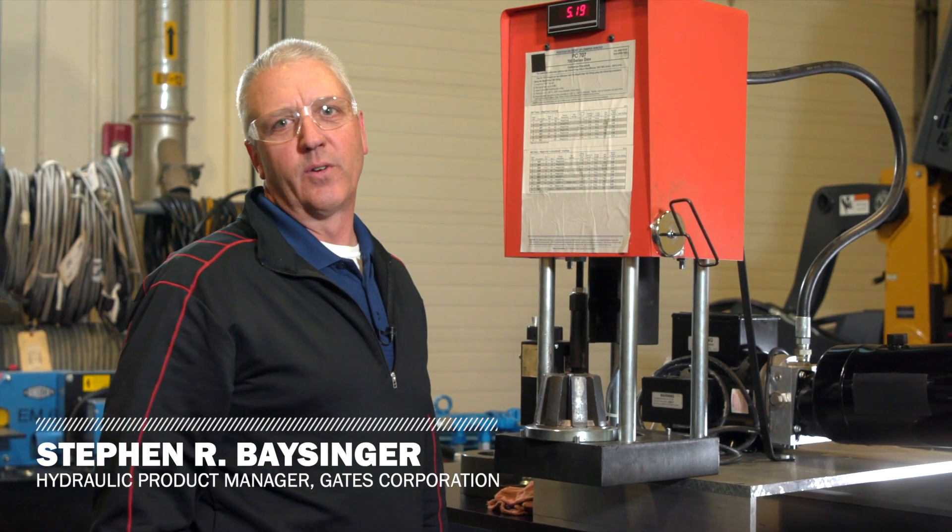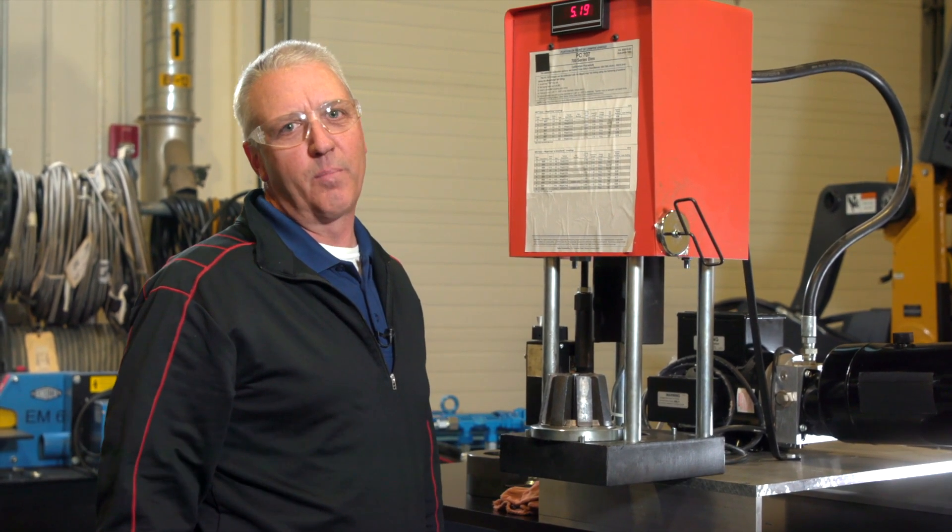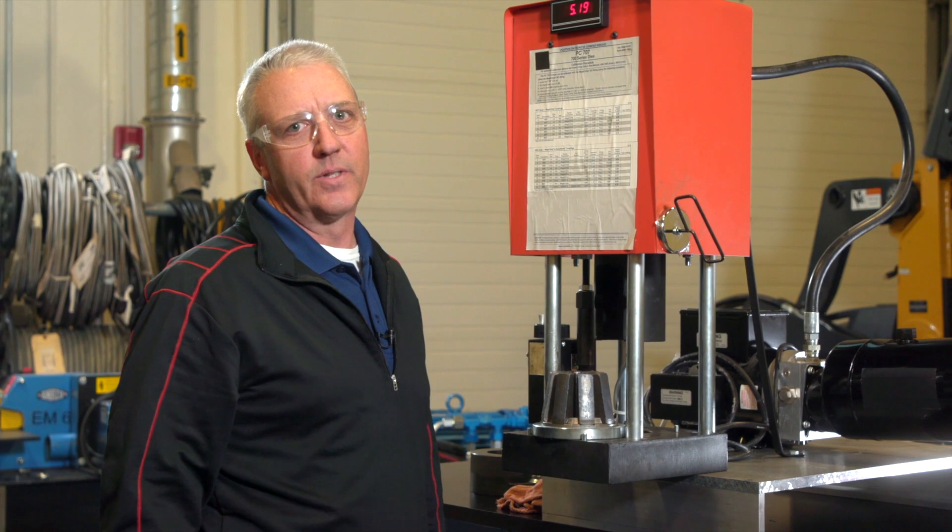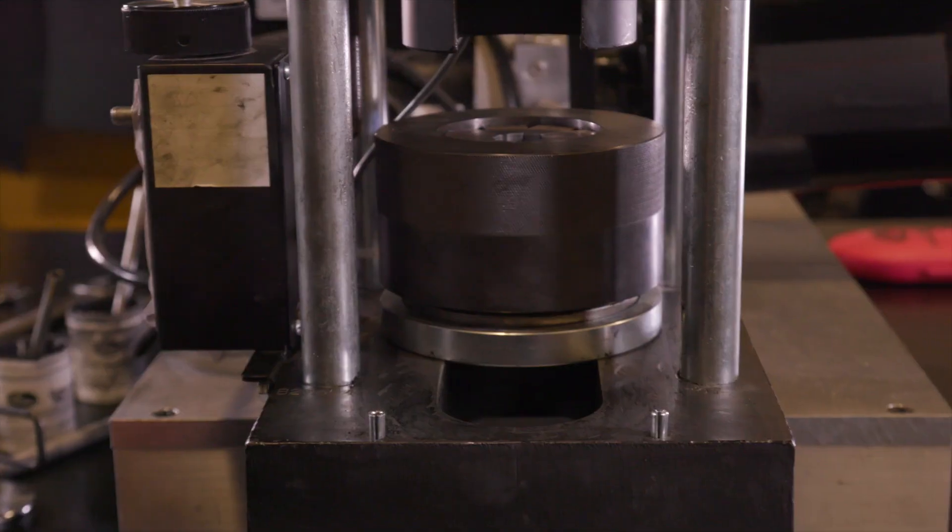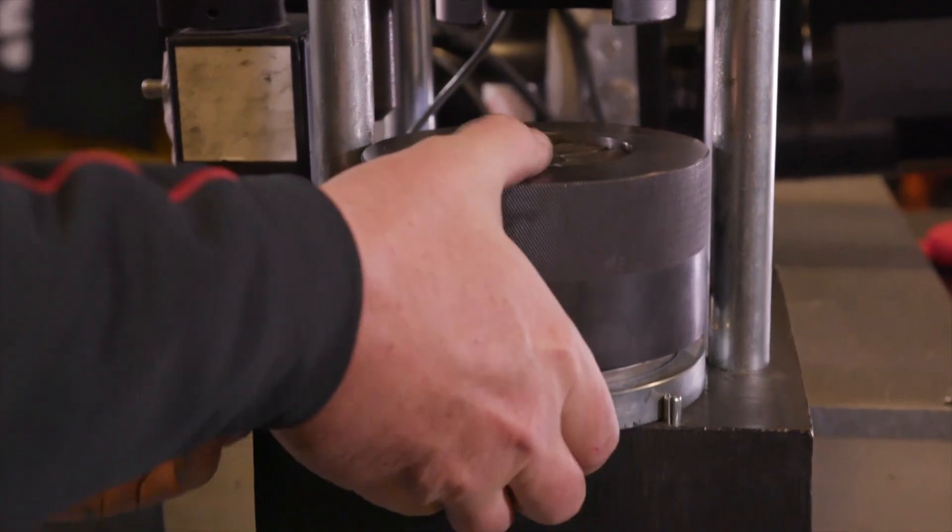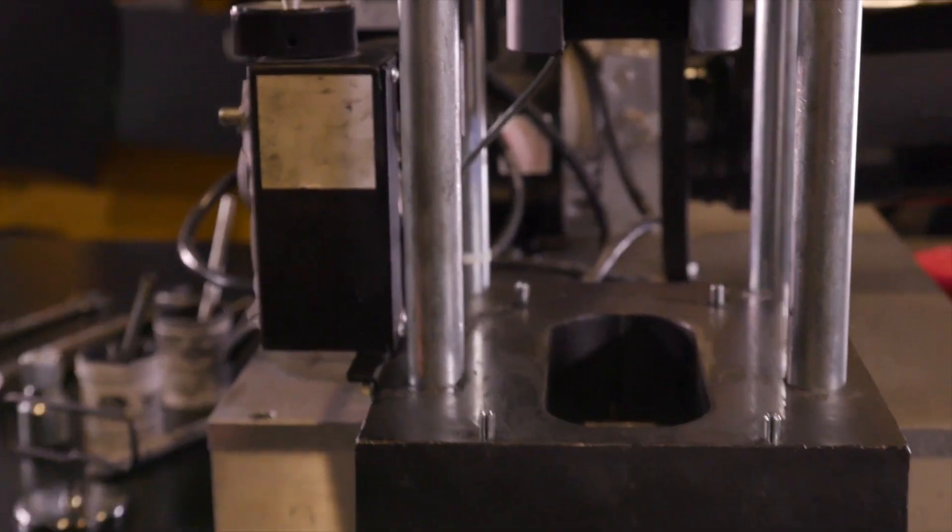Calibrating the Gates PC-707 crimper is a simple and necessary process to ensure proper and safe crimping. First, make sure the area under the pusher cup is clear of the die cone or die sets.